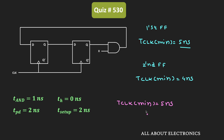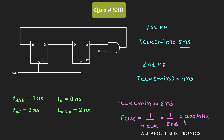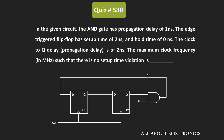With a minimum clock duration of 5 nanoseconds, there will be no setup time violation. The maximum clock frequency is 1 / T_clock = 1 / 5 ns = 200 MHz. Therefore, for the given sequential circuit, the maximum allowable clock frequency is 200 MHz.